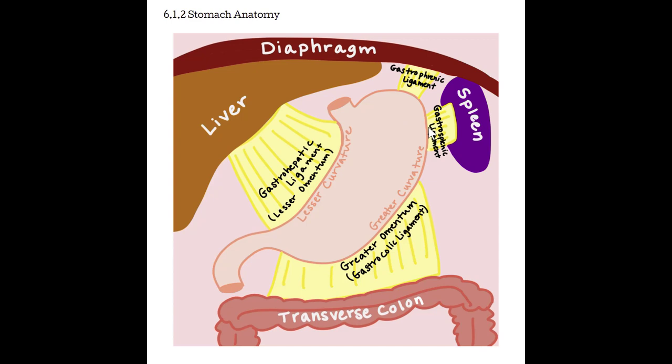The stomach is supported by four main ligaments. On the lesser curvature side, it is connected to the liver with the gastrohepatic ligament, also known as the lesser omentum. On the greater curvature, we see the greater omentum, also known as the gastrocolic ligament, which connects the stomach to the transverse colon. The gastro-phrenic ligament connects the fundus of the stomach to the diaphragm. And the gastrosplenic ligament connects the upper body and fundus portion of the stomach to the spleen.